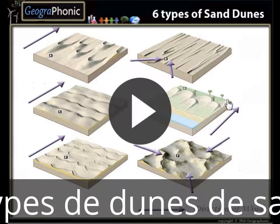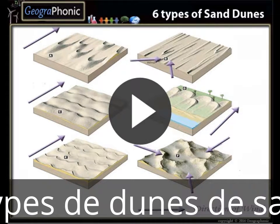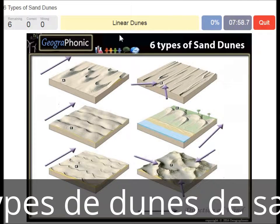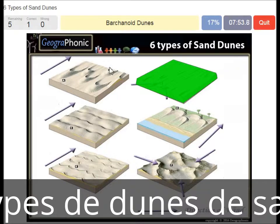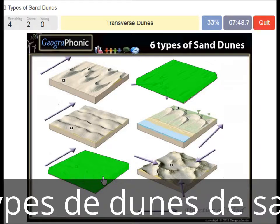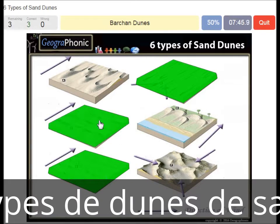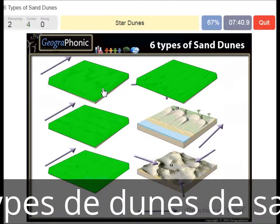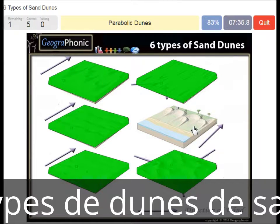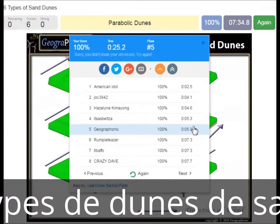This is a free exercise for geography. Can you recognize the six types of sand dunes? I'm going to press start now. Linear dunes, barchan dunes, star dunes, and parabolic dunes at the beginning. You can play this game yourself.